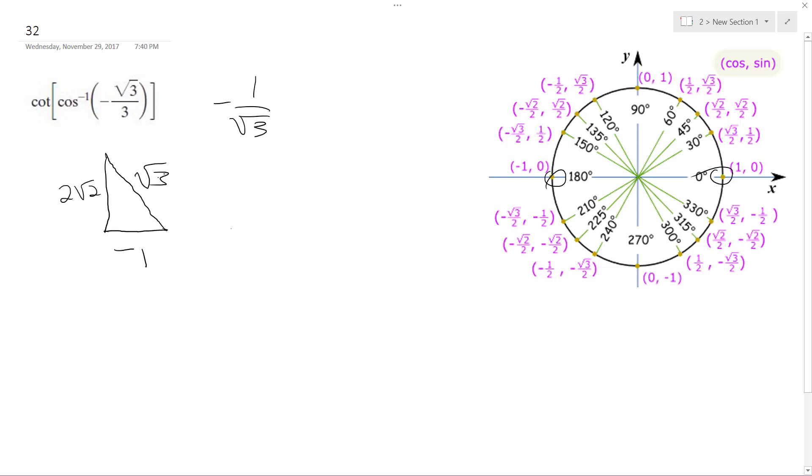It'd be the square root of nine minus one, which is square root of eight, and that breaks down to two root two. All right, so we want the cotangent. This is the radial value; I don't know what this pi value is because this isn't a pretty 30-60-90 triangle or whatever.